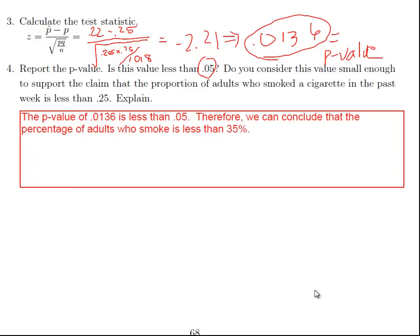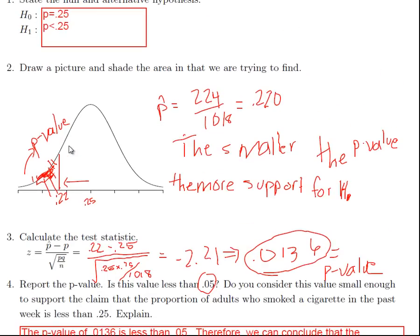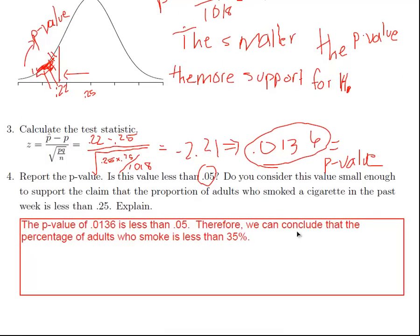Alright everyone, we are going to pick up where we left off. So we finished up the problem on page 68 and that was the one about the smoking and we found that we had a small p-value. Remember, a small p-value gives us evidence against the null for the alternative. So we're going to reject the null and conclude that we had evidence that the percentage of adults who smoke is less than 25%.